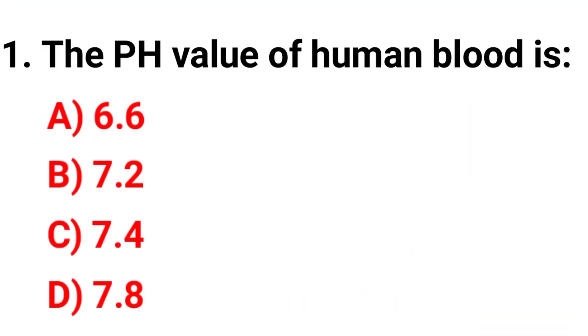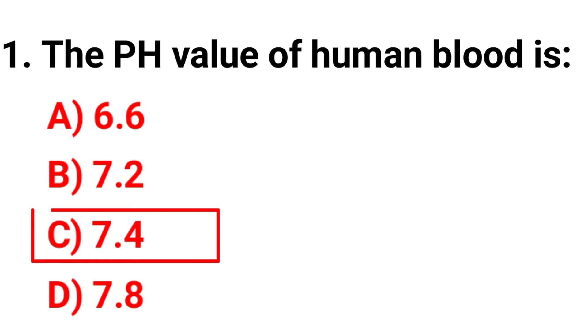Question 1: The pH value of human blood is — option A: 6.6, B: 7.2, C: 7.4, D: 7.8. The correct answer is option C — 7.4 is the pH value of human blood.